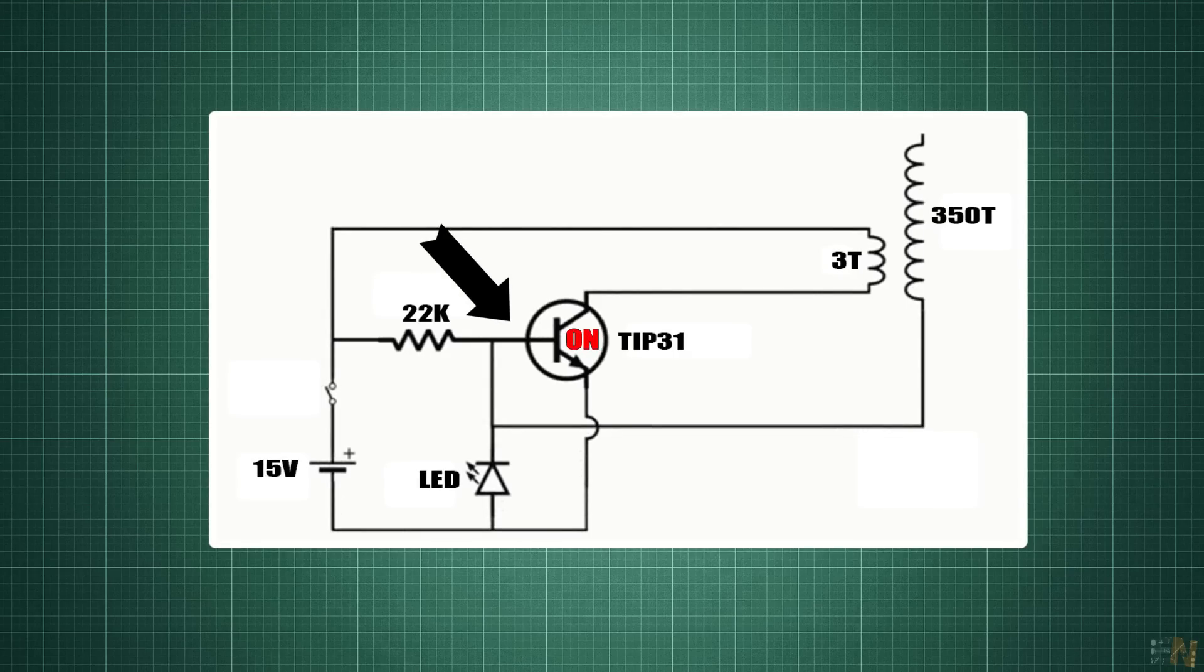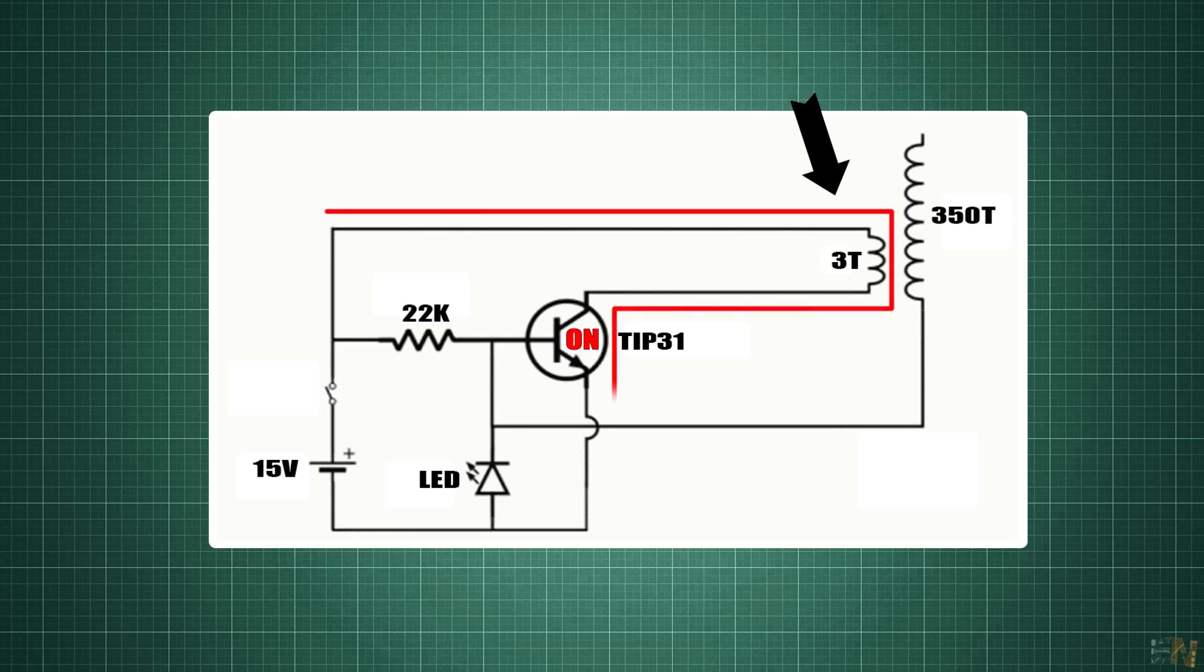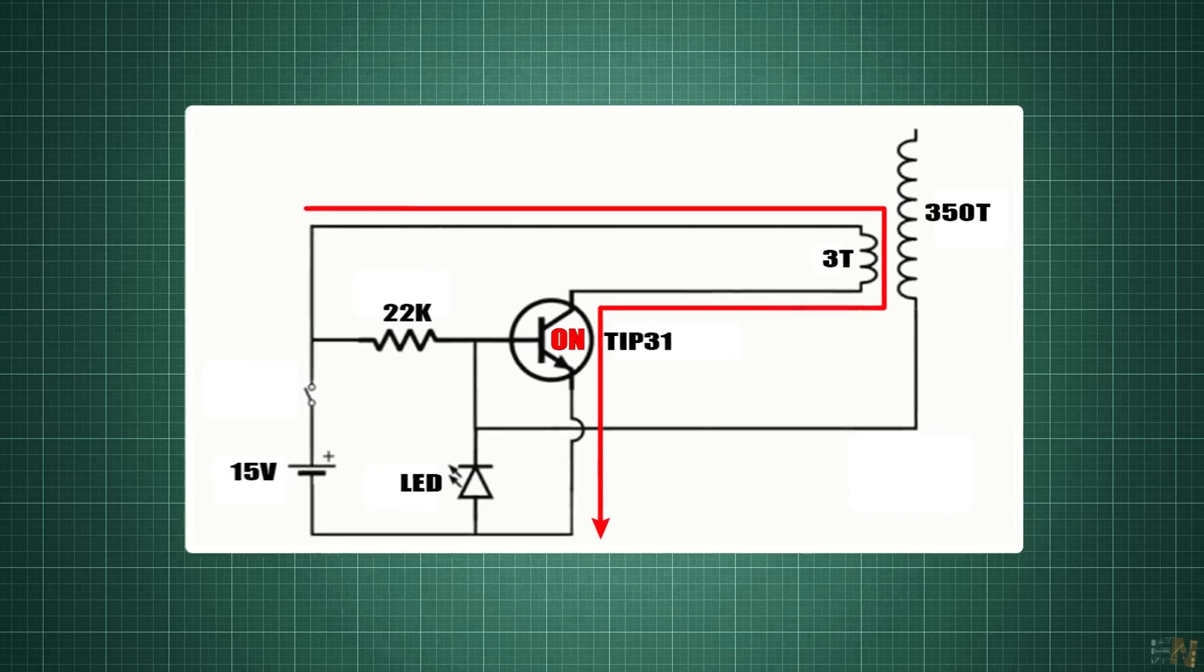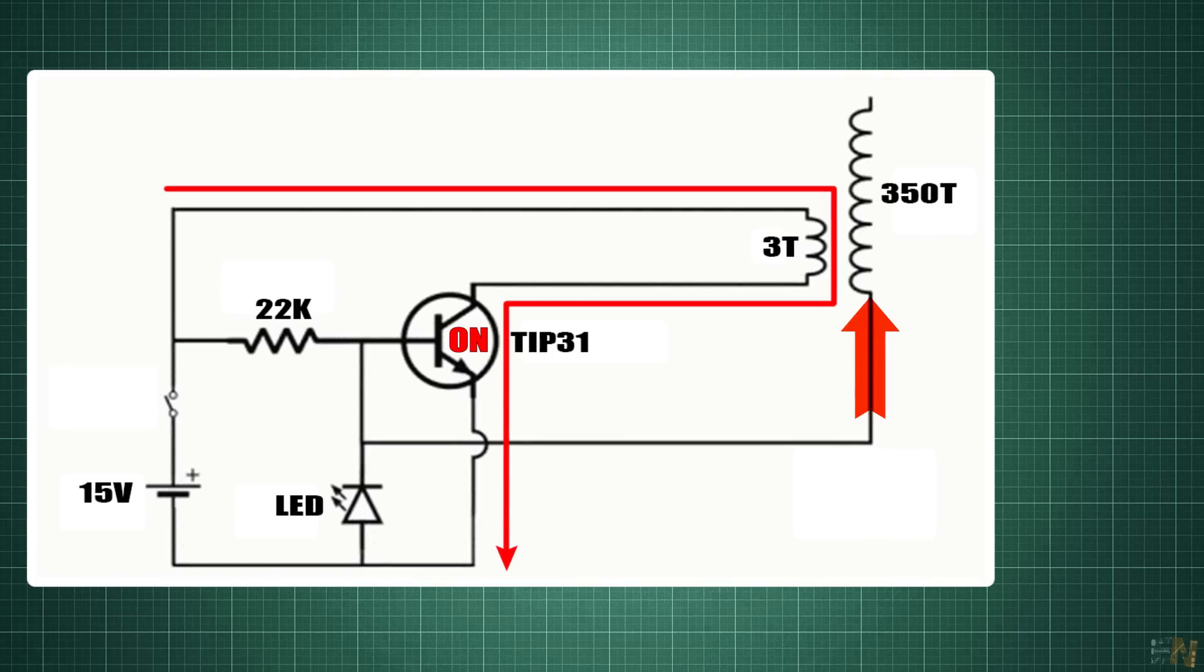So current could pass from the collector to the emitter and at the same time through the primary winding of the Tesla coil. That will induce current in the secondary and create a voltage drop. So we have positive on top of the coil and the negative polarity here.